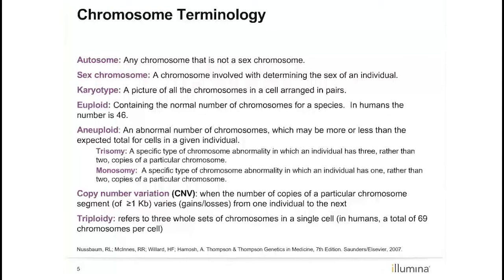A trisomy is a type of aneuploidy that results from the presence of a third copy of a particular chromosome. A monosomy is a type of aneuploidy that results from the absence of one of the two copies of a particular chromosome. Copy number variation, also known as CNV, involves imbalances in segments of DNA or chromosomes that differ from one individual to the next. These differences may not cause any health or developmental problems; however, some types of CNVs, like microdeletions and microduplications, may be disease-causing. Triploidy refers to an entire extra set of chromosomes per cell, or 69 total chromosomes per cell, designated 3N.